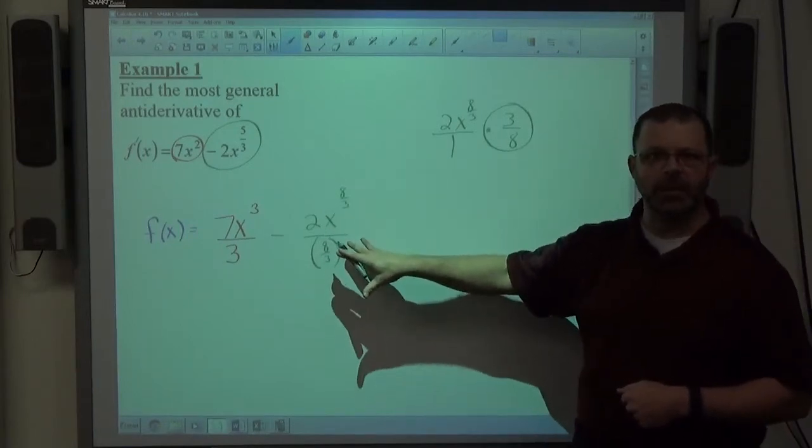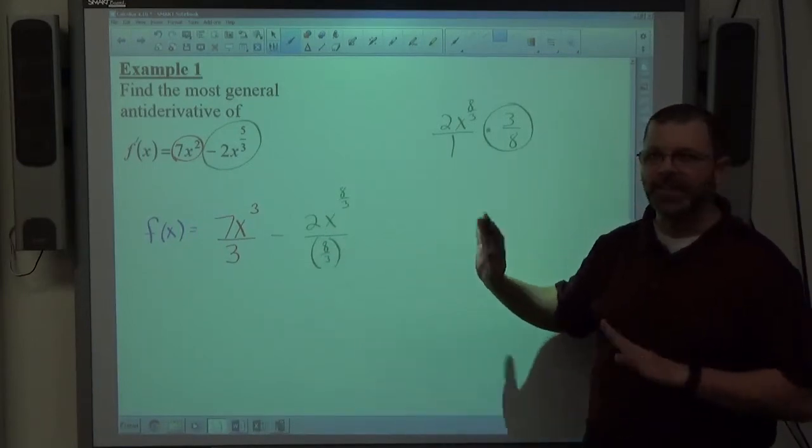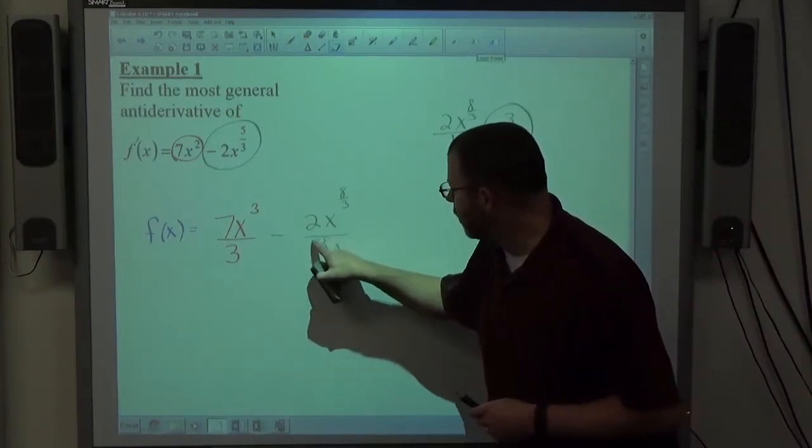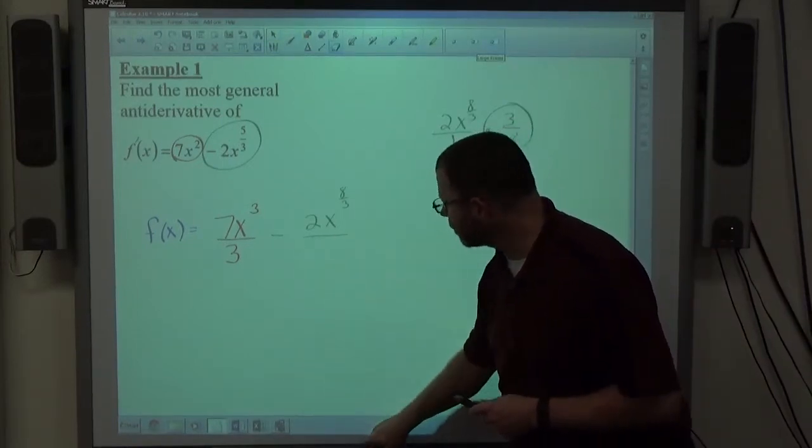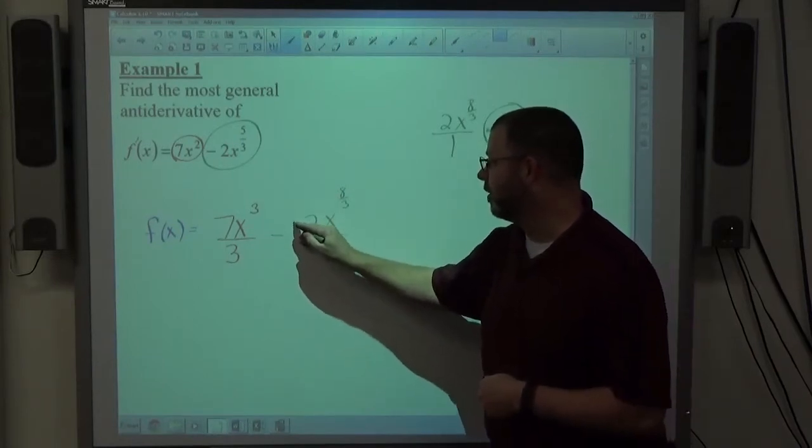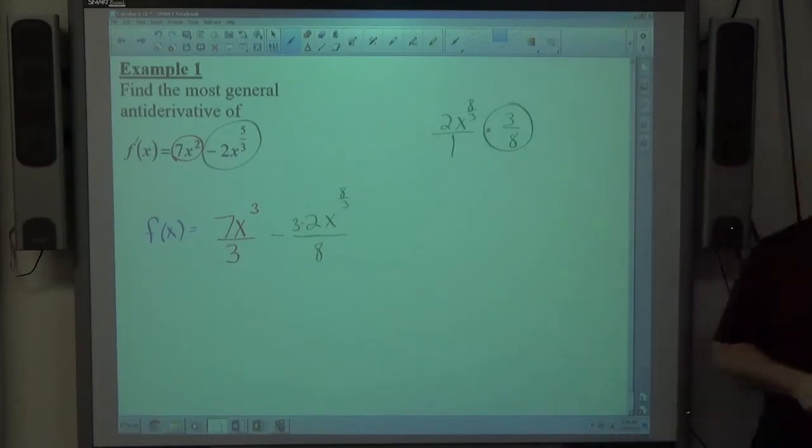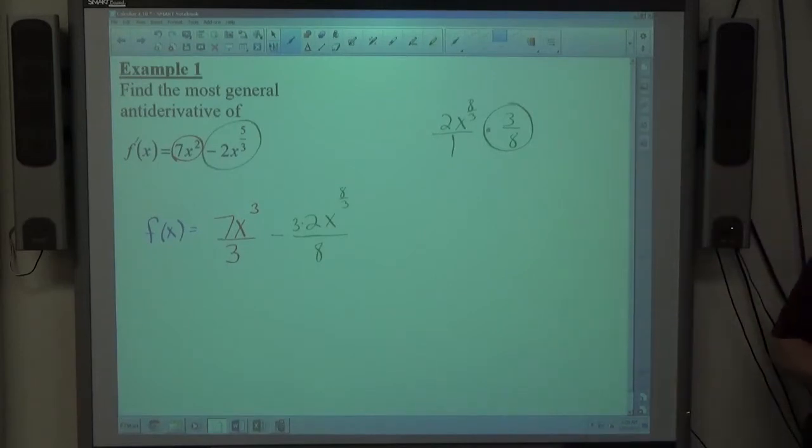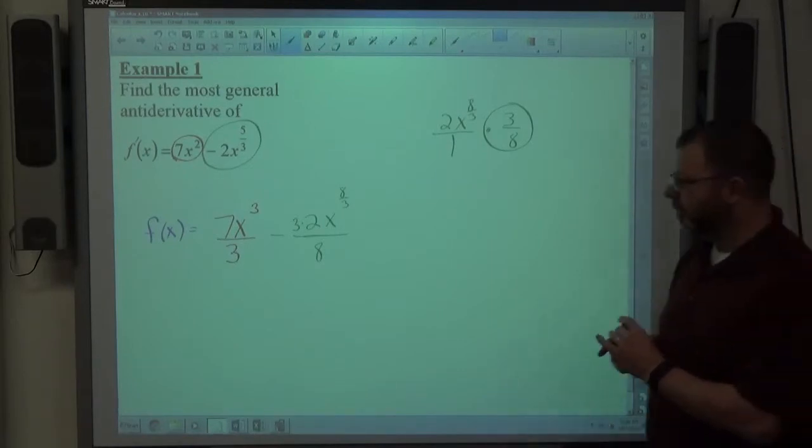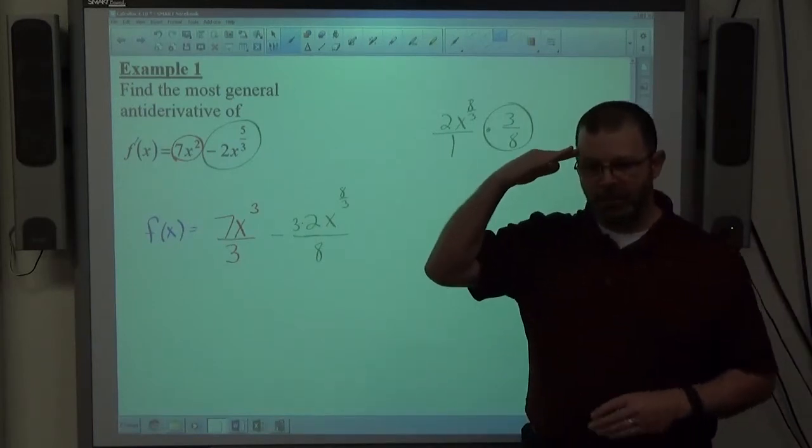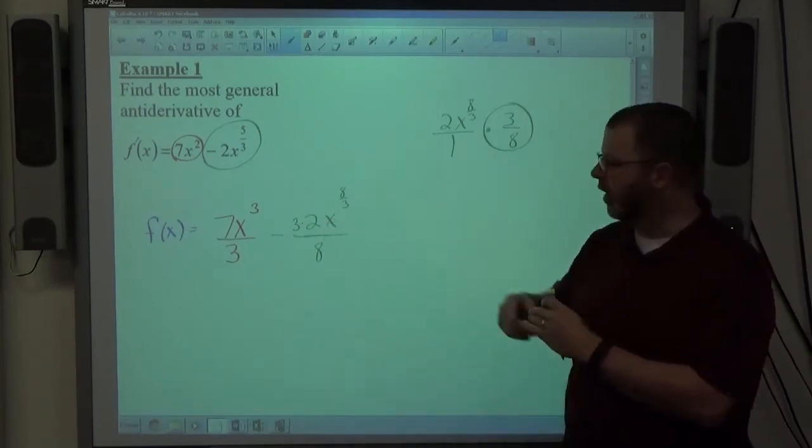And that's what I want to get across to you, that divided by 8 thirds is the same as times 3 eighths. And again, in a fractional power structure like this, that happens a lot. So what I do personally when I see this scenario, I know I'm supposed to divide by 8 thirds, I go ahead and make it times 3 eighths right off the bat. The quicker you come to terms with that, the easier your life is going to be. And again, fractional powers are very common in this section.